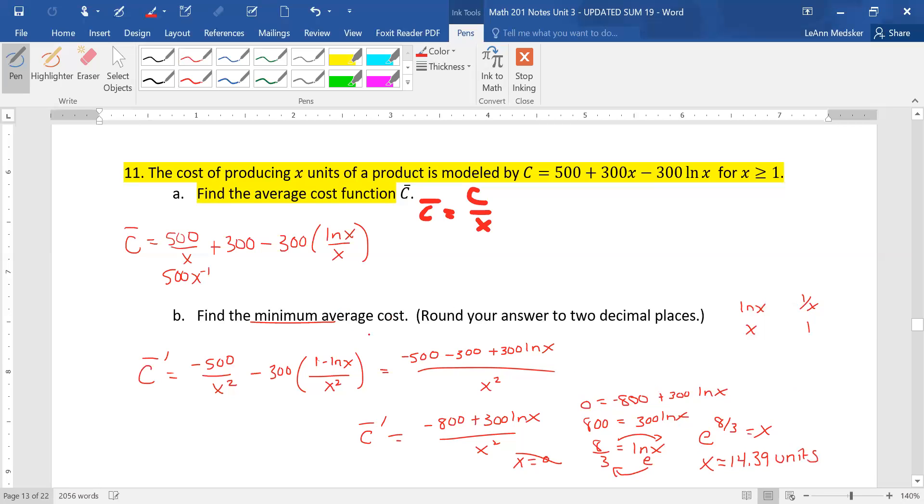If we want the average cost, we need to put our minimum value of units into the average cost function. So this is going to be C bar is 500 divided by 14.39 plus 300 minus 300 times natural log of 14.39 divided by 14.39. Kind of running out of space.